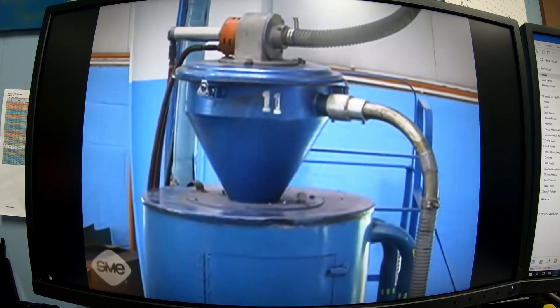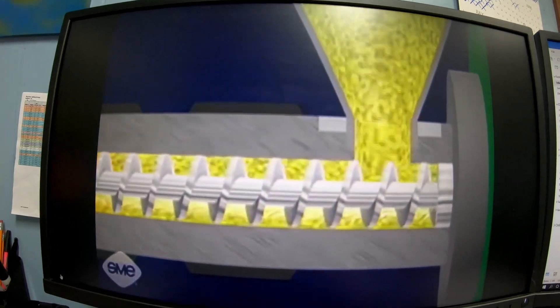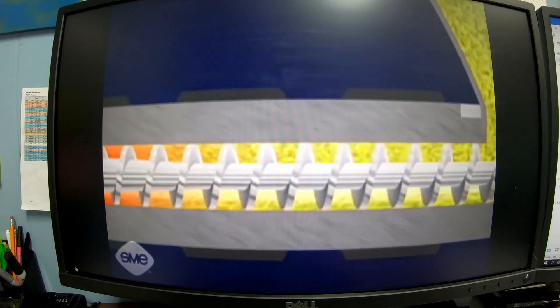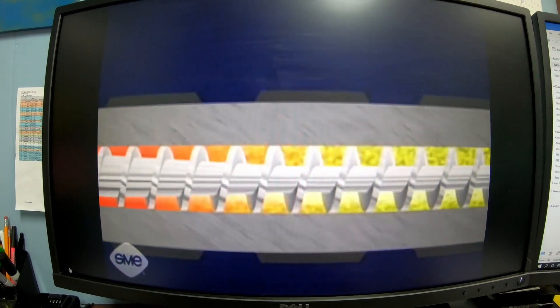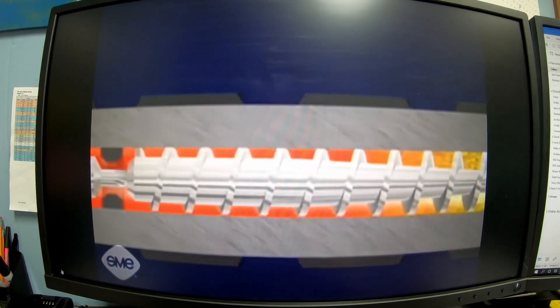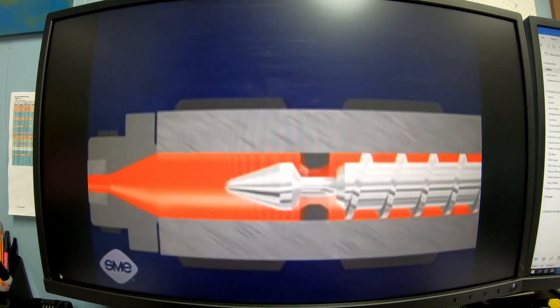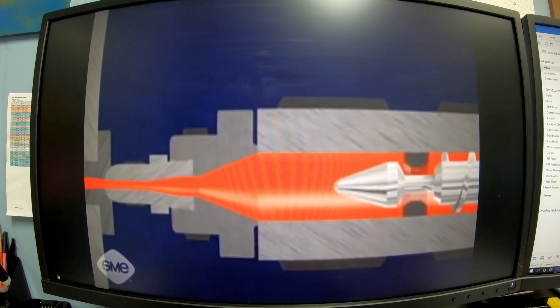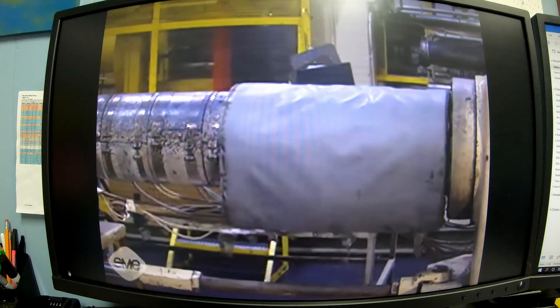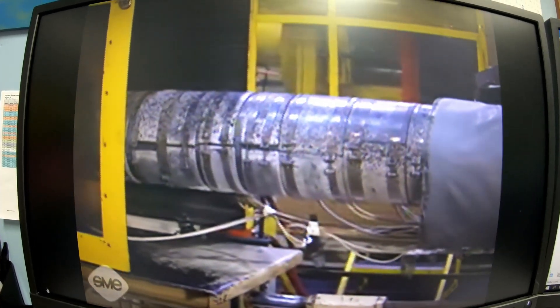As the resin enters the injection barrel, it is driven forward by the rotation of the screw which is powered by the hydraulic motor. The resin plasticizes or melts as the turning screw drags it towards the nozzle end. This is referred to as drag flow. Drag flow causes the polymer molecules to slide over each other, creating frictional heat which melts the material. External heating bands provide additional heat to the injection barrel.